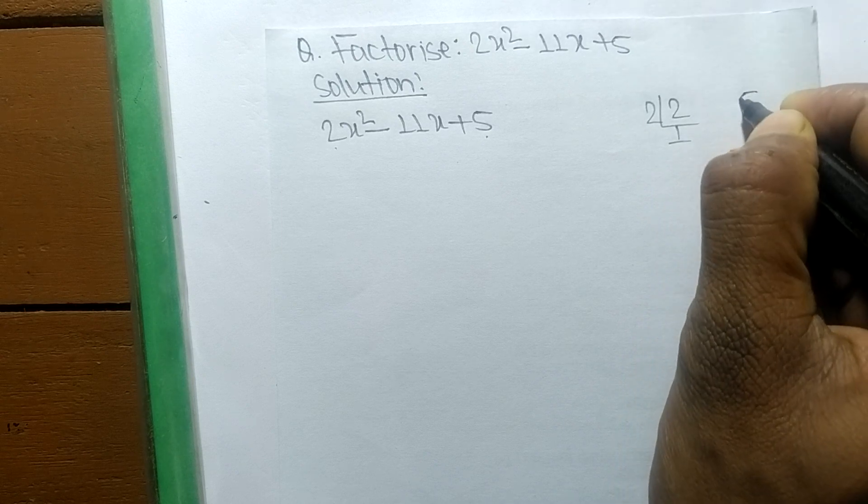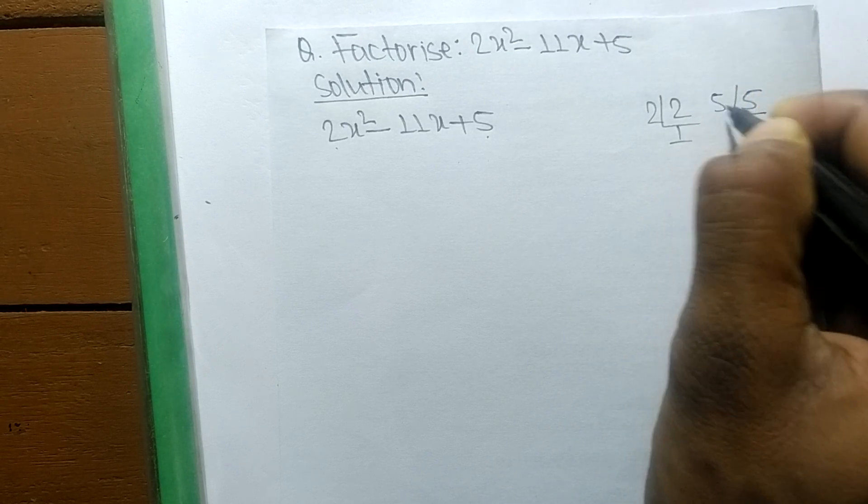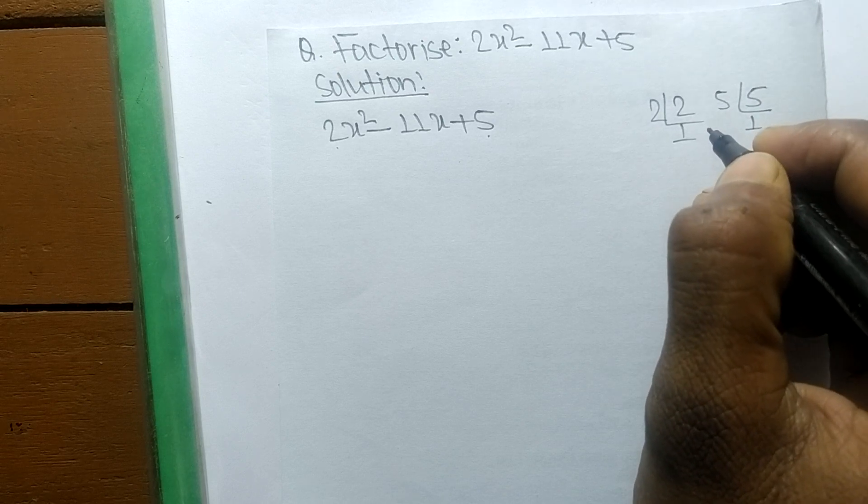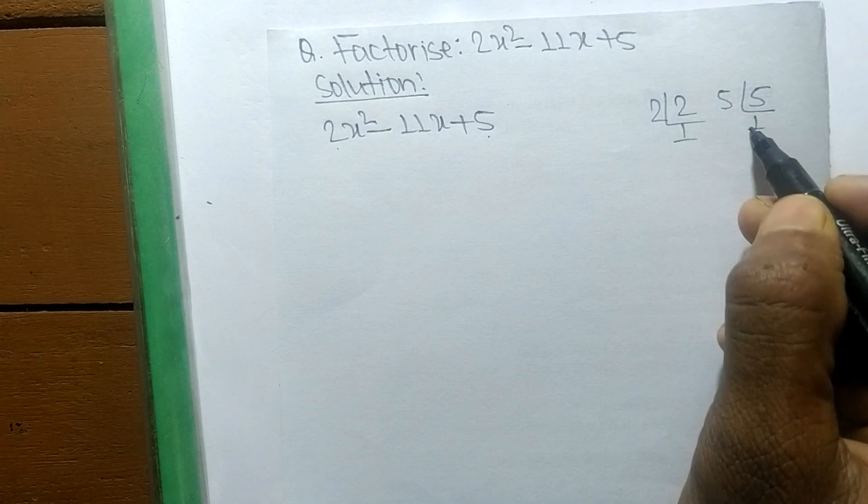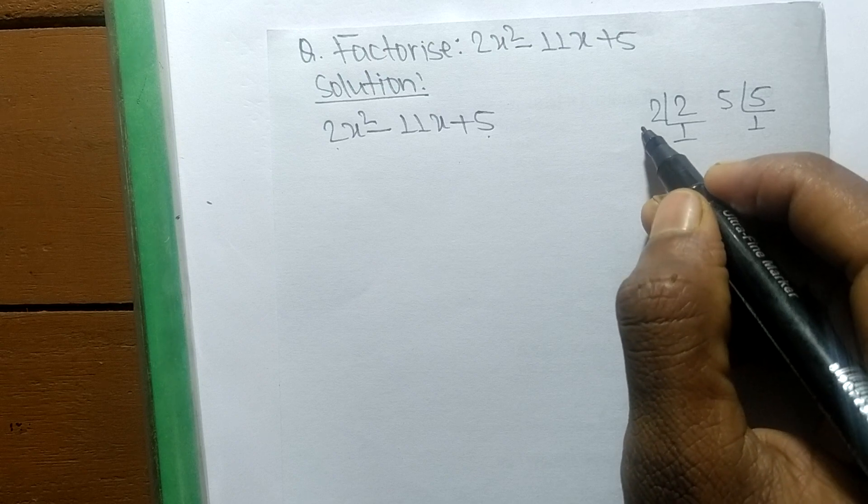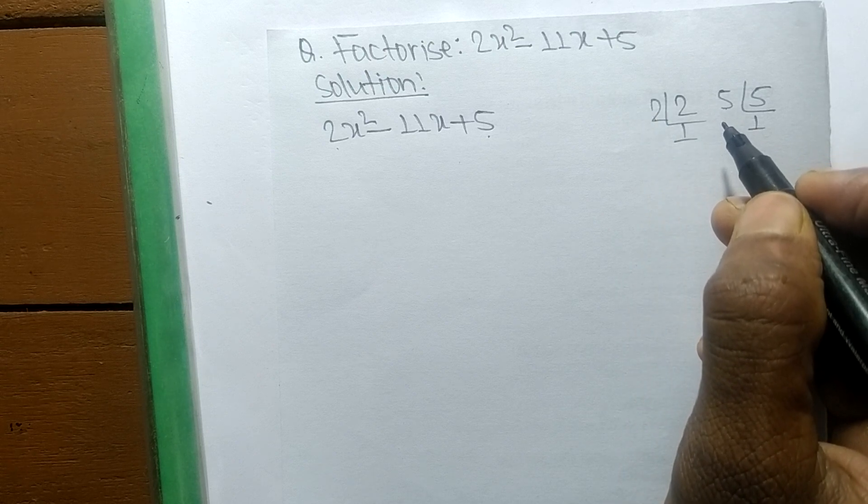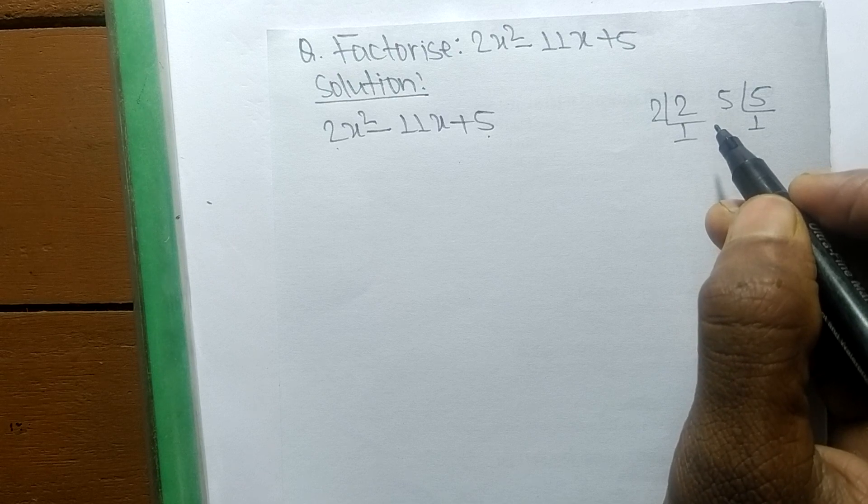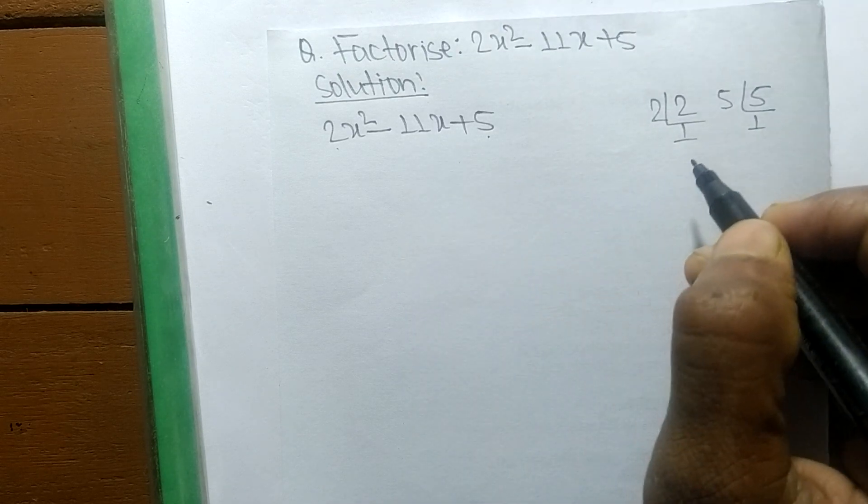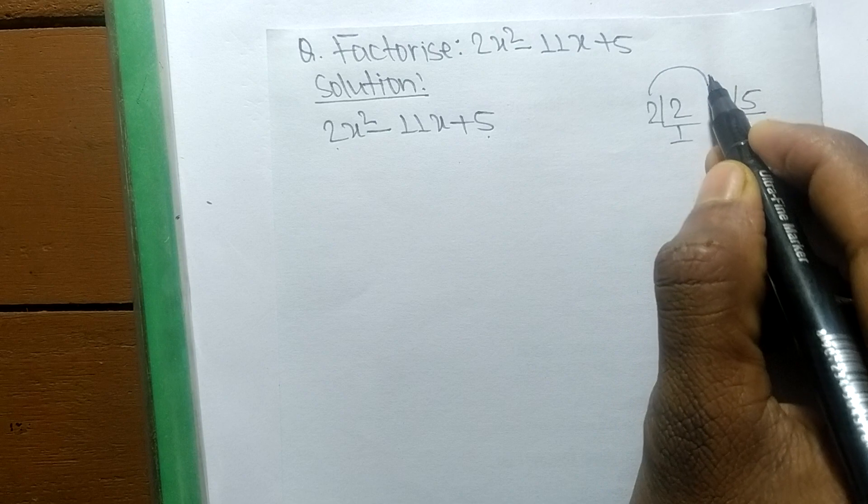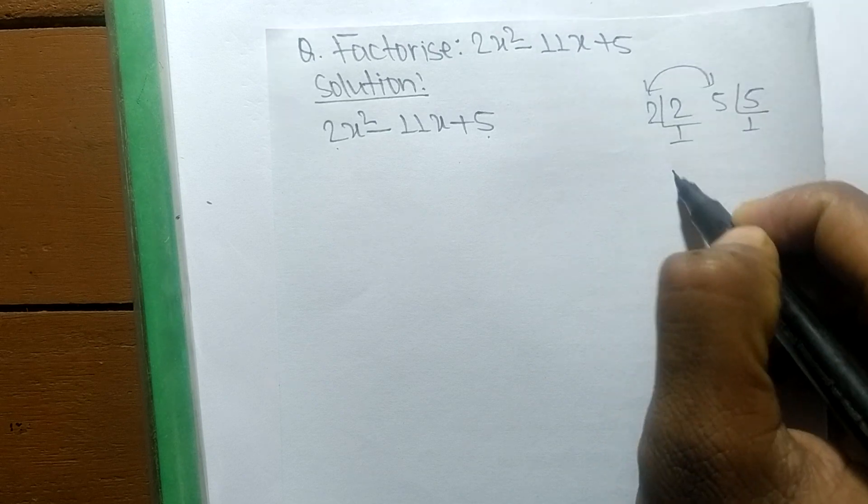The prime factors of 5 is 5 times 1, which means 5. So we got the numbers 2, 1 and 5, 1. By multiplying within these numbers, we have to find such numbers that by adding up we get minus 11. When you multiply 2 and 5, we get 10.